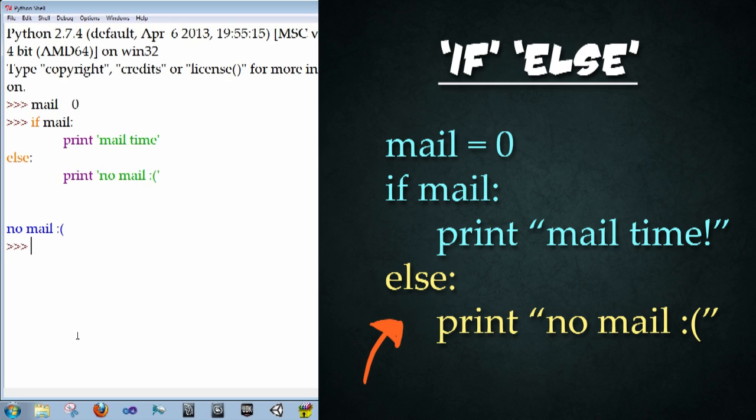And now it prints no mail, sad face. The reason being is because the condition of the if statement was not met, therefore it passed it and skipped printing the mail time and instead jumped to the else, which is the catch all again. If nothing else, if no other conditions are met, then it will print no mail, sad face.